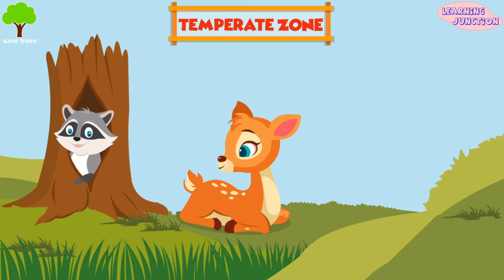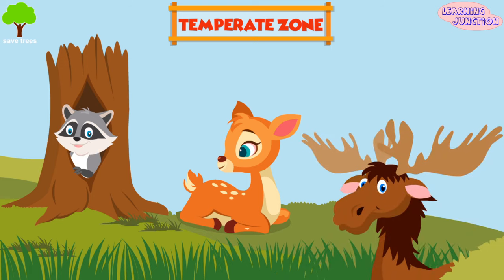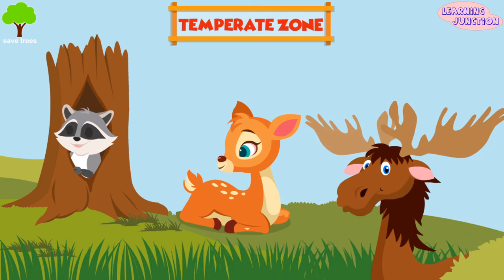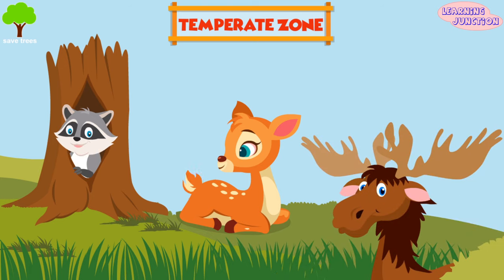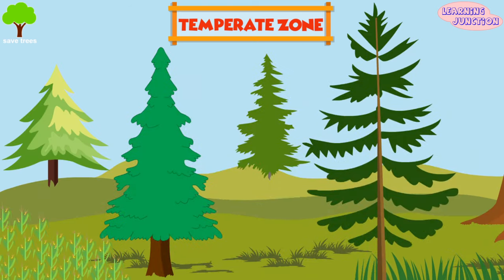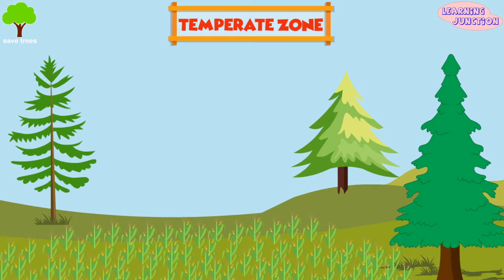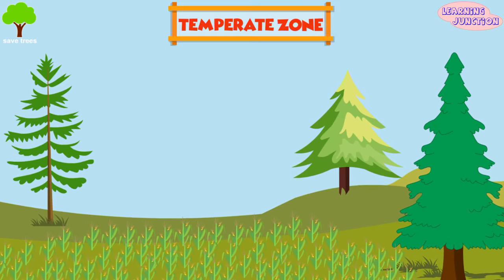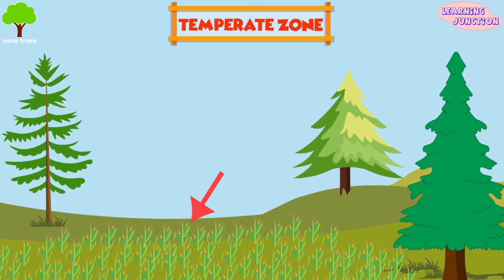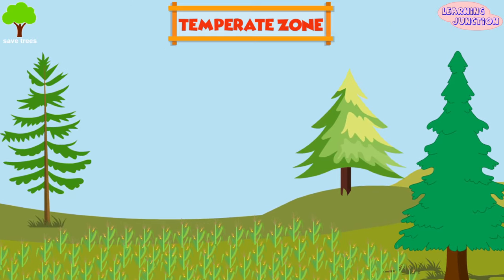A wide variety of animals like raccoons, deer and moose live in temperate forests. In temperate regions, you can easily see trees like pine, deodor, fir and spruce. These zones are well suited to agricultural production of rice and other crops.